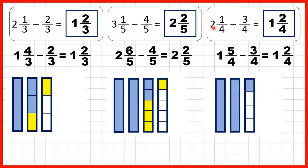Finally, we had two and one-quarter, but we needed to take three-quarters away. We changed one of our wholes into quarters, and that meant we had four more quarters, so we could add the denominator to the numerator. That gave us one whole and five-quarters, and you can see we have five quarters here because each of these pieces is one quarter.